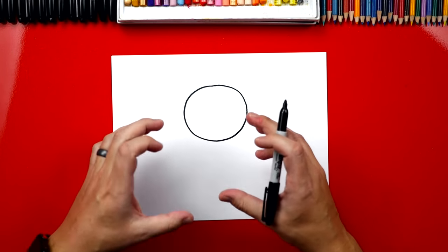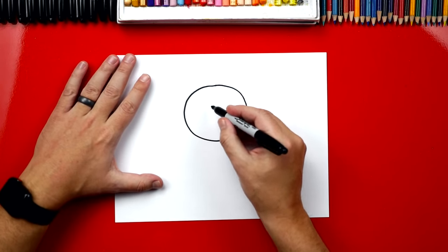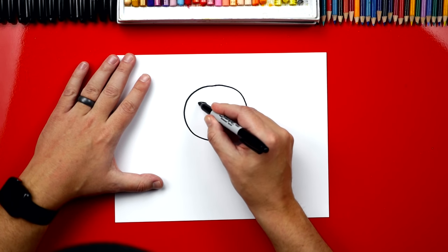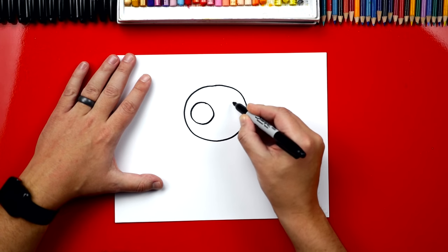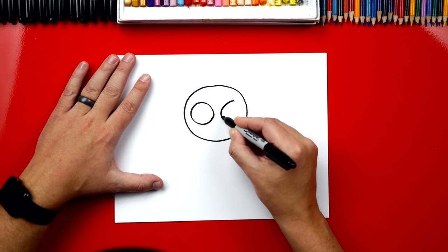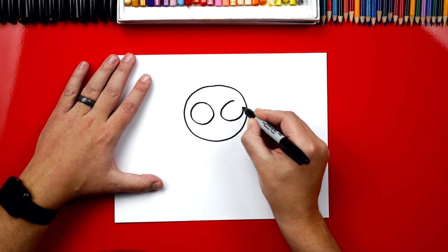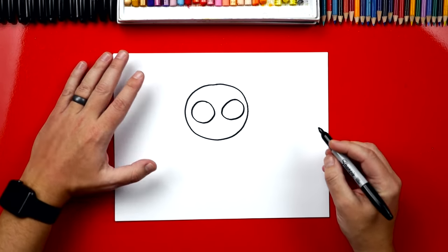Now we're gonna draw her eyes, and her eyes are huge. So we're gonna draw two big circles right next to each other. So there's one. This one's a little smaller, but that's okay, we're practicing.